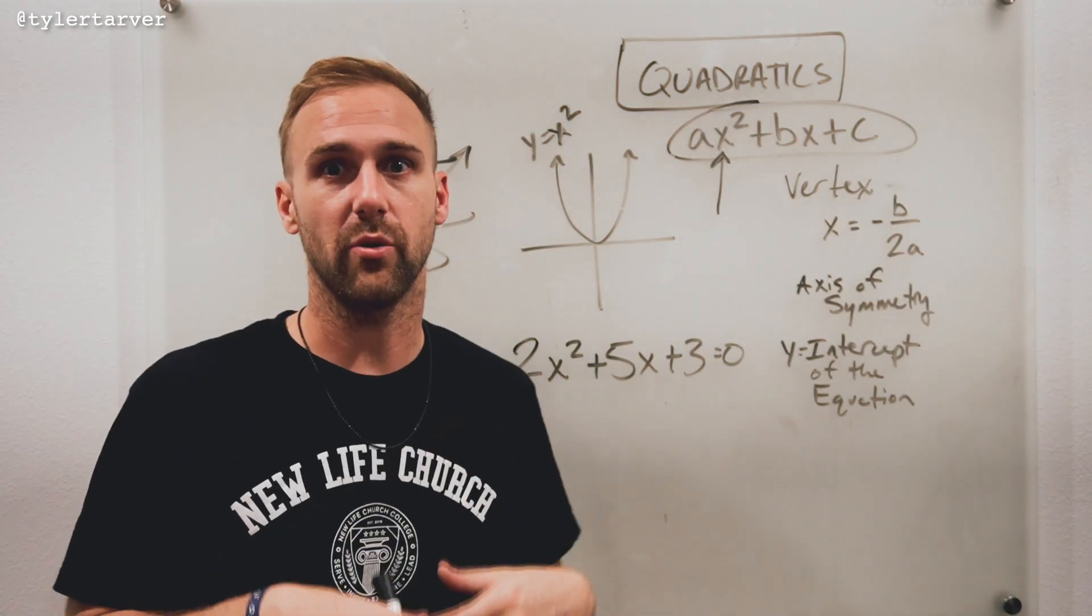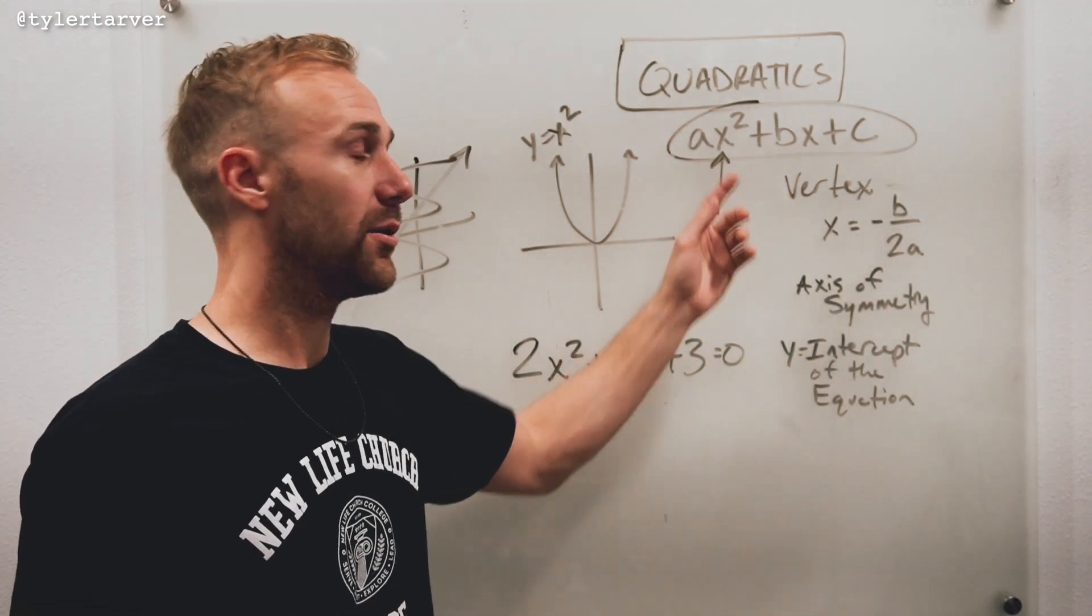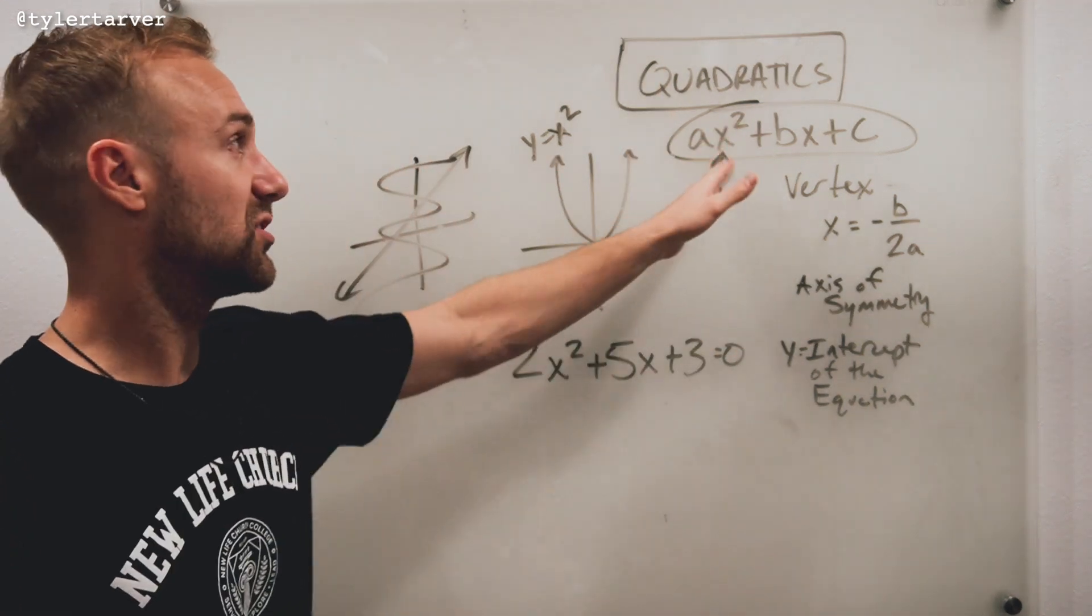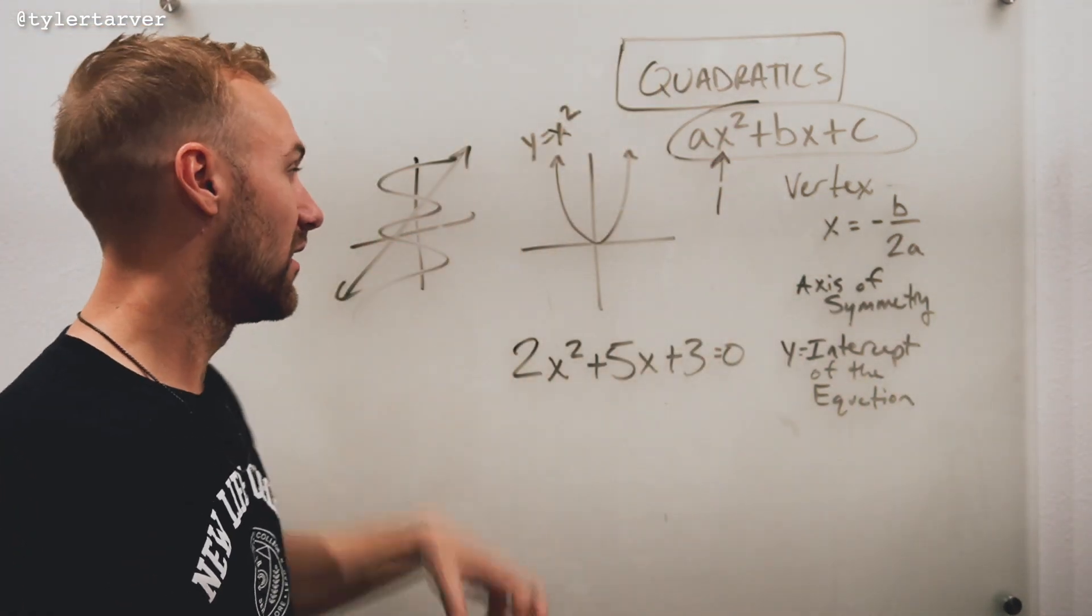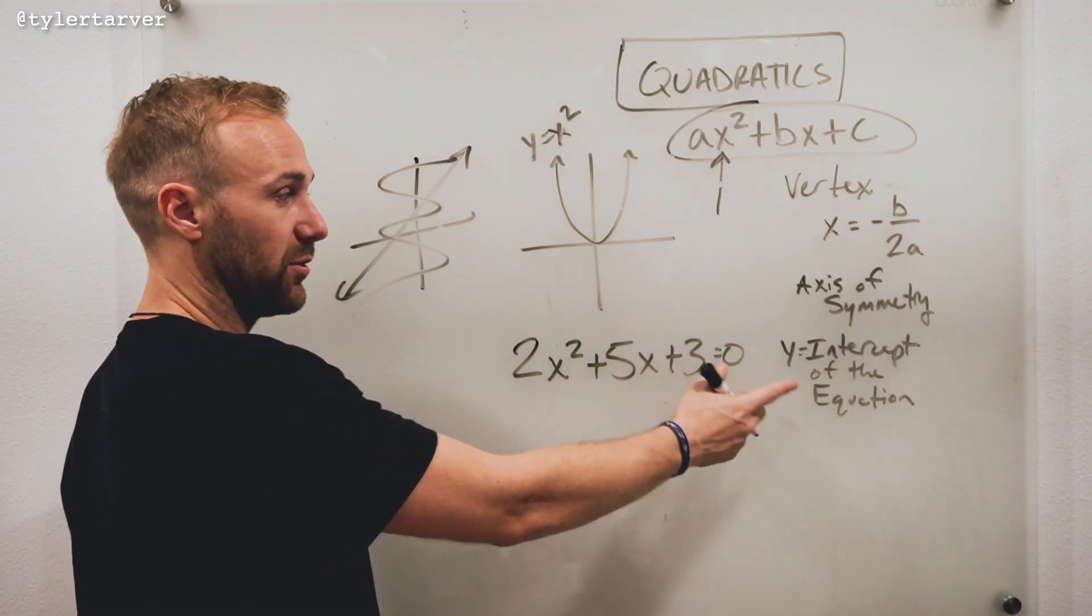Now it can be like 3x squared, negative 5x squared. It can be all that. Or it can just be x squared because then that means that the A was 1. So with a quadratic, you have to have the x squared and it can't go bigger than that on there. So like here's an example. 2x squared plus 5x plus 3 equals 0.